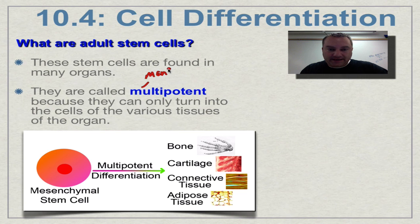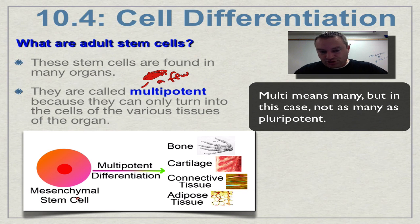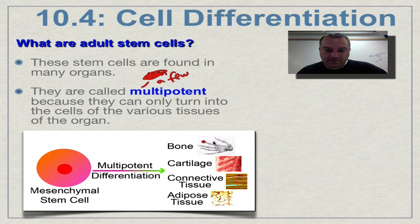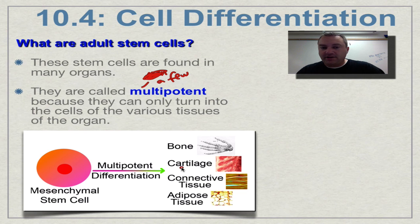Multipotent means they can only become a few cell types — when it comes to stem cells, 'multi' means a few, while 'pluri' means many. For example, a mesenchymal stem cell — mesenchymal being a type of connective tissue — can become bone, cartilage, connective tissue like ligaments and tendons, or adipose (fat) tissue. It cannot turn into all 200 cell types, but it can turn into a few, so it's multipotent.